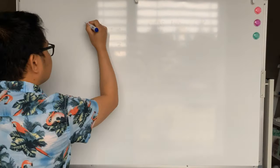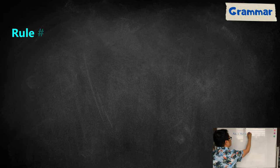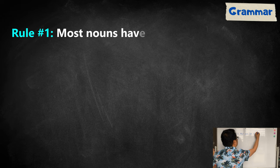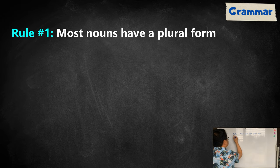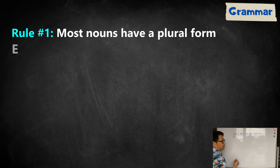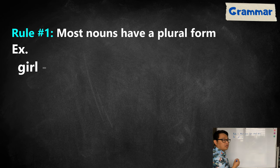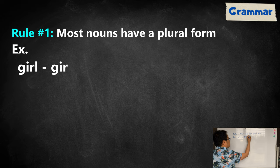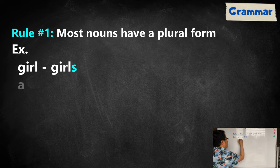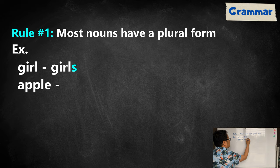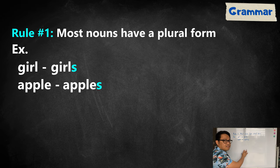However, there are several rules to follow when making nouns plural. Rule number one, most nouns have plural form. For instance, the plural form of girl is girls. You just need to put s at the end of the word. Apple. To become plural, you just need to put s at the end of the word and that is apples.